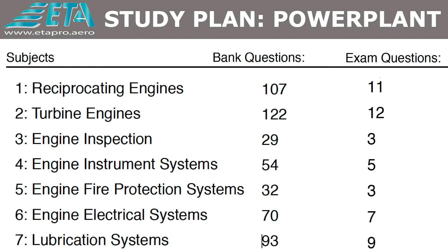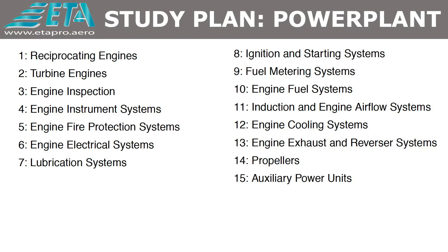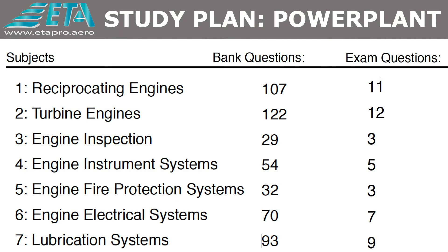Recuerden que la puntuación mínima para pasar este examen es de 70. Revisemos todos los temas de la sección para efectuar el análisis. Para esto, hemos dividido los 15 temas en dos partes para una mejor comprensión. Aquí se pueden ver los 7 primeros temas y la cantidad de preguntas que aparecen disponibles en el banco de estudio.